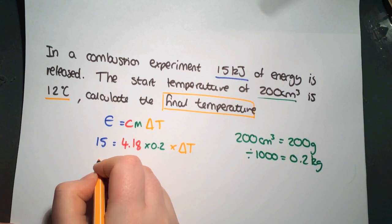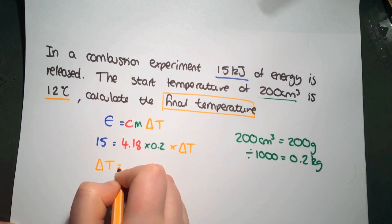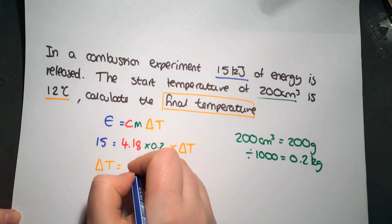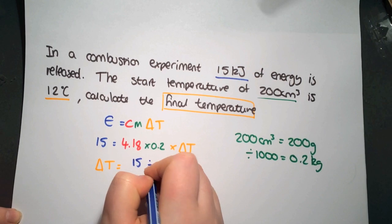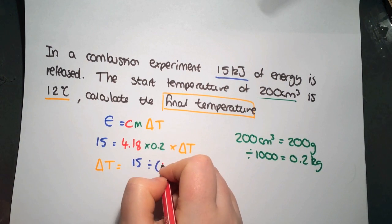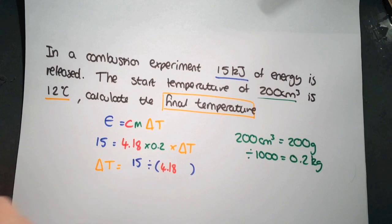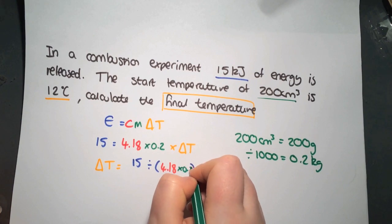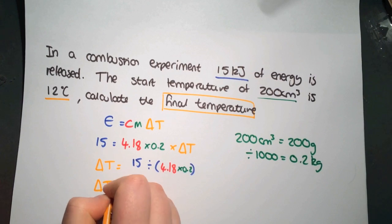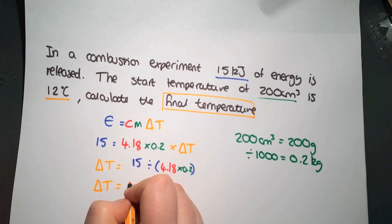If we work this out, we end up with delta T equals 15 divided by 4.18 multiplied by 0.2. So that gives us a change in temperature of 18.